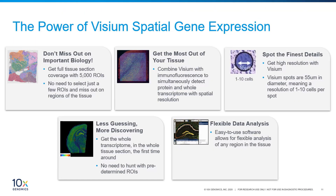In this final slide, let me summarize the power of our Visium Spatial Gene Expression solution. First, with full tissue section coverage of 5,000 spots, you will not need to pre-select any regions of interest and potentially miss biologically important regions. Second, combining Visium with immunofluorescence enables you to simultaneously detect both protein and whole transcriptome information from the same tissue section. Third, our 55-micron spot diameter enables a high resolution of between one to ten cells. Fourth, obtain whole transcriptome data for all spots at the same time. Last but not least, our easy-to-use software allows for flexible analysis of any region within your sample.